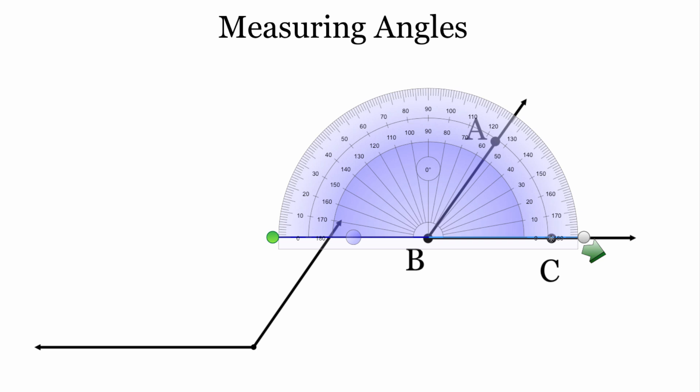there's two sets of numbers. If our angle opens up from right to left like this one does, the bottom side is on the right and then it opens up towards the left, we're going to focus on the bottom numbers. So we're looking for the number that matches up with this B, A ray. And since our angle is opening from right to left, we're focusing on the bottom numbers. So right now it's looking like it's somewhere between 50 and 60.